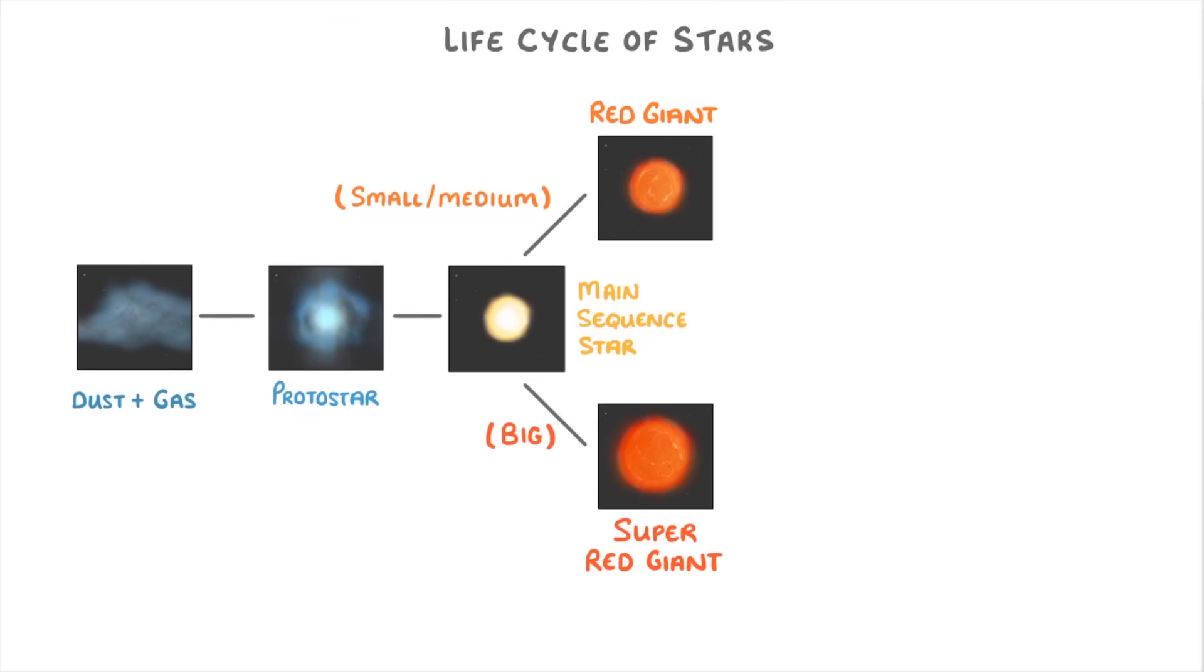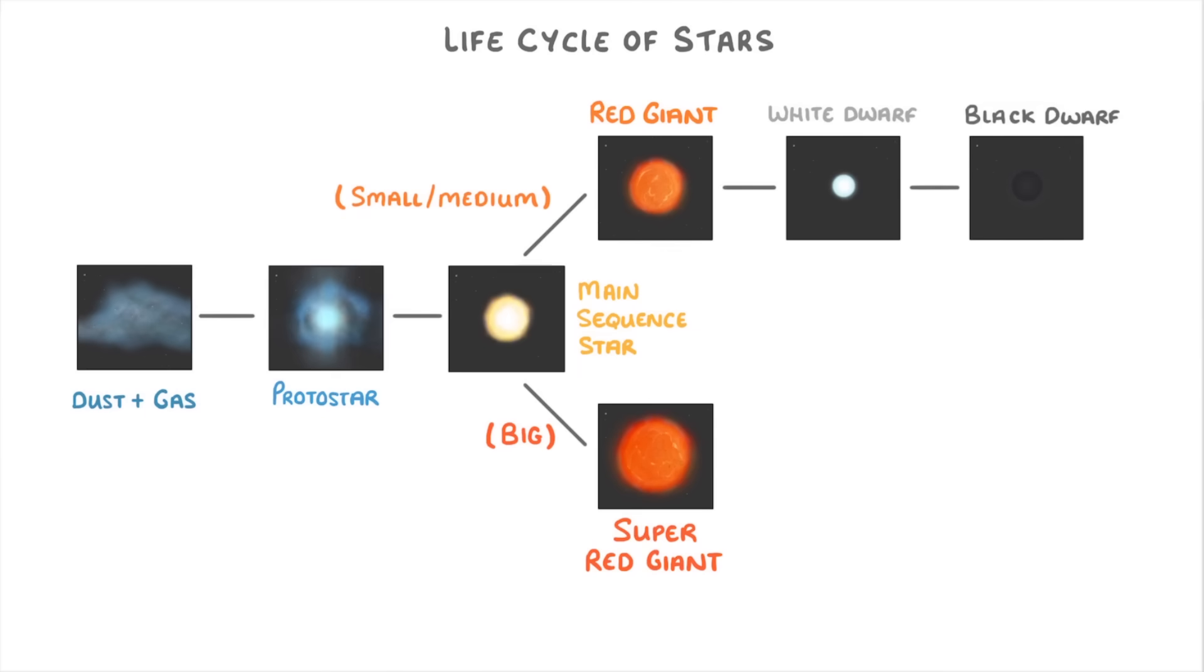The red giants throw off their outer layers to reveal a hot, dense core that we call a white dwarf, which then cools to become a black dwarf.